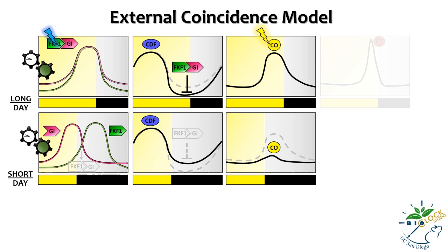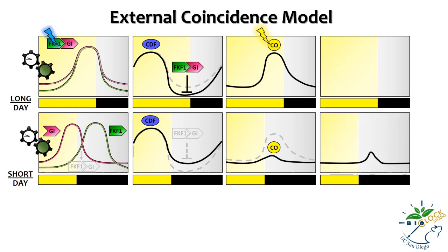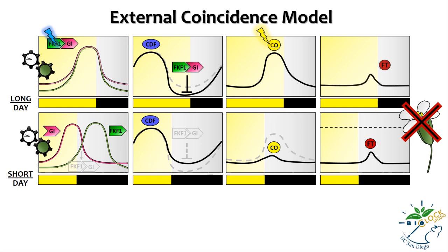Ultimately, during short days, not enough FT is produced to reach the critical threshold, whereas during long days, the FT protein level builds up day after day until it reaches the threshold above which flowering is triggered.